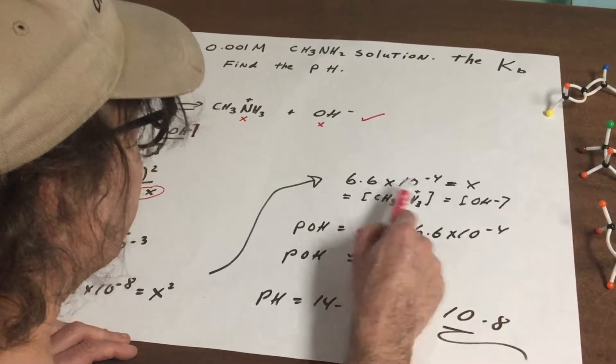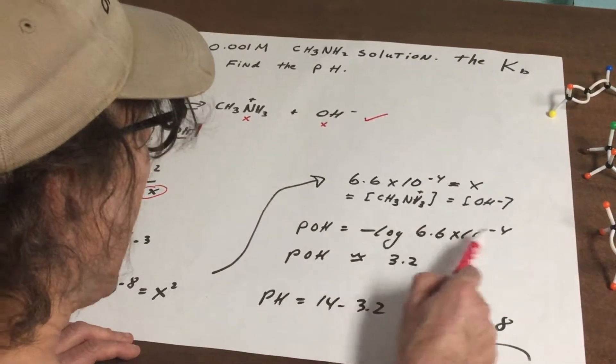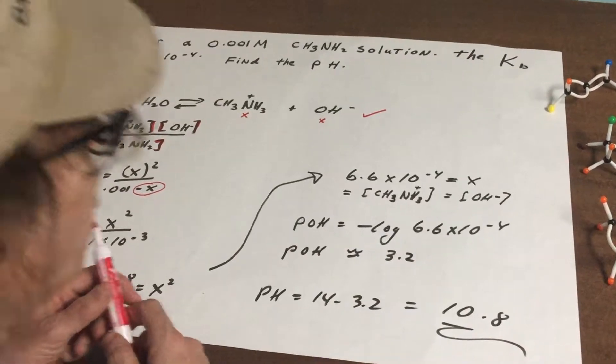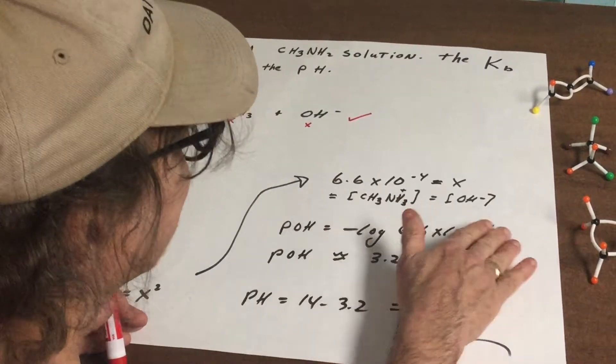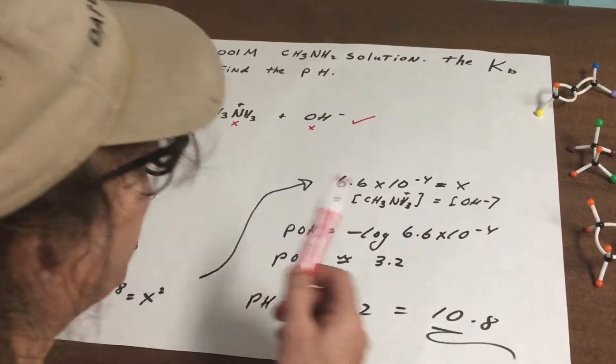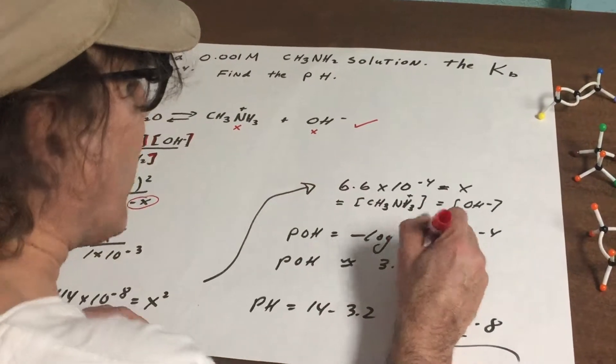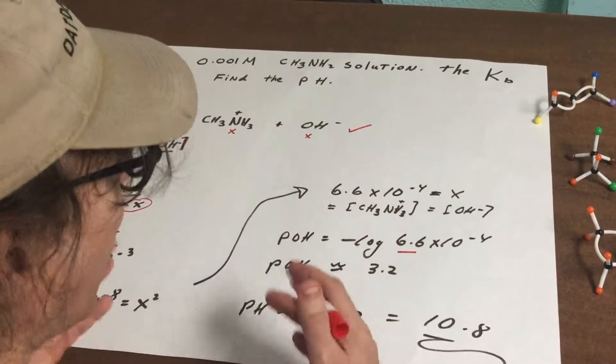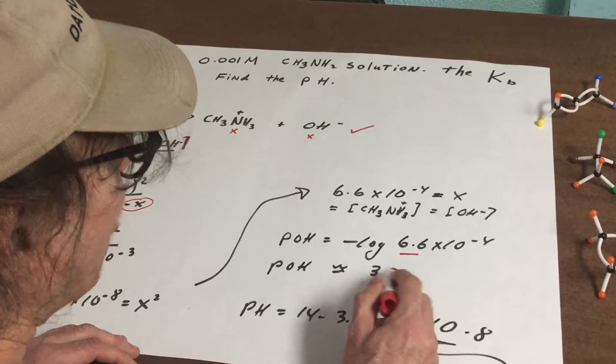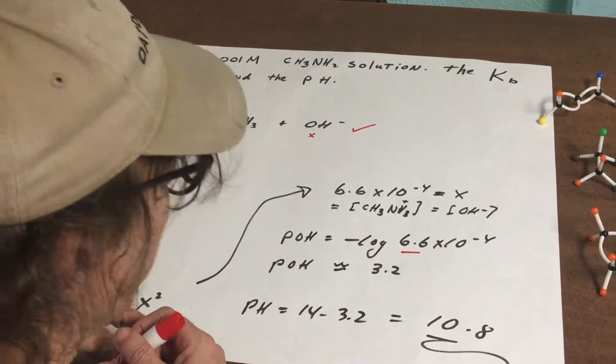Well we want the pH, so since the hydroxide ion is known, minus the log of that is equal to - well if it was a 1×10^-4 and we took the negative log of it, it would have been 4. But this is a 6.6 so we want to drop our answer so it'll be about 3.2.